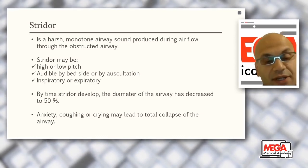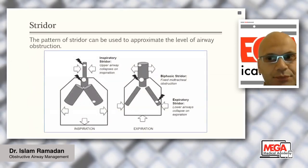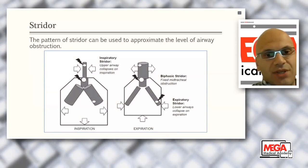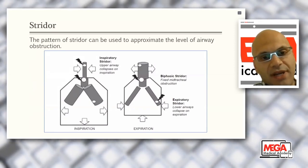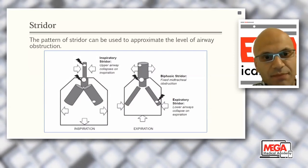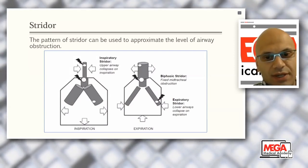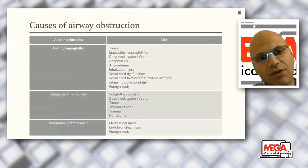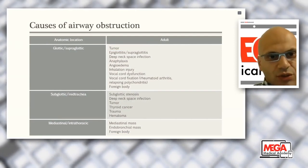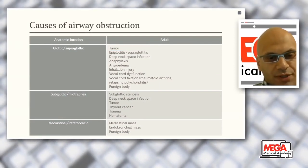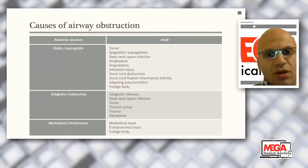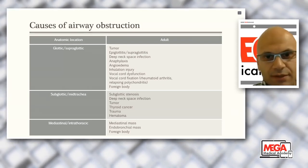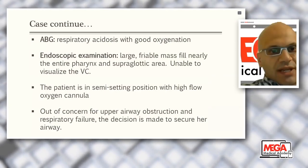Stridor may be inspiratory, expiratory, or biphasic. As noted, stridor means more than 50% of the airway is obstructed. In certain populations, anxiety, coughing, or crying may lead to total collapse of the airway. From the pattern of stridor, you can determine the level of obstruction: inspiratory stridor indicates upper airway obstruction, biphasic stridor indicates mid-tracheal obstruction, and expiratory strider indicates lower airway obstruction. Causes of airway obstruction can be classified by anatomical location — glottic and supraglottic, subglottic, and mediastinal or intrathoracic — including tumors, epiglottitis, deep neck infection, anaphylaxis, angioedema, and foreign body.